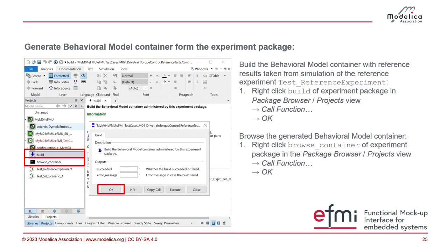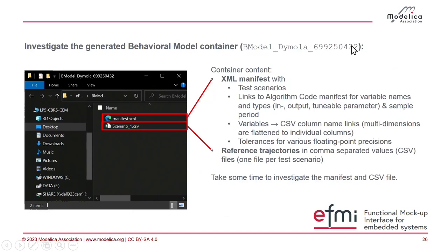You can build the behavior model container by calling the build function of the package. It will run the simulation of the reference experiment, record the trajectories, and generate a behavior model container with those trajectories and a manifest. The manifest contains a description of the test scenarios, tolerances, and links to the algorithm code container. You can browse this container by right-clicking the browse container function. In Explorer, the container will open and you will see the CSV file and the manifest — the XML file lists variables, test scenarios, units, descriptions from the model, and a mapping from variable names to column names.